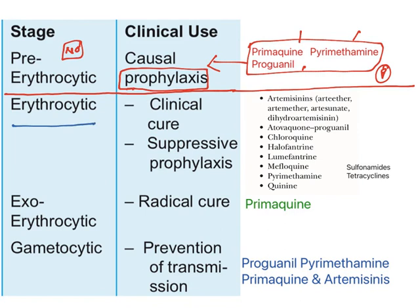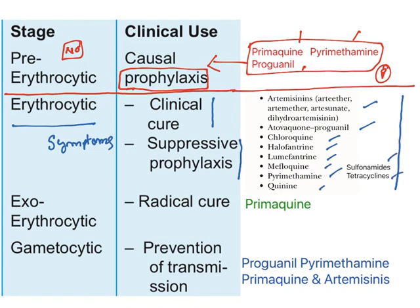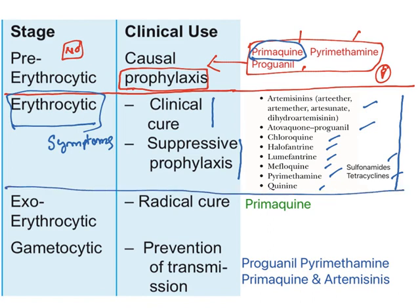For the erythrocytic stage, where symptoms are shown, the drugs used are considered clinically curative or suppressive prophylaxis. Most anti-malarial drugs fall in this category: artemisinins, atovaquone, proguanil, chloroquine, halofantrine, lumefantrine, mefloquine, pyrimethamine, quinine, sulfonamides, and tetracyclines. Except for primaquine, all other drugs are used to treat the erythrocytic stage.